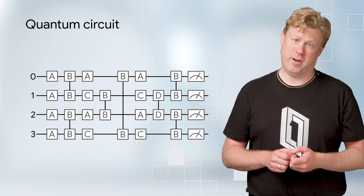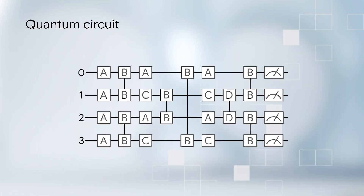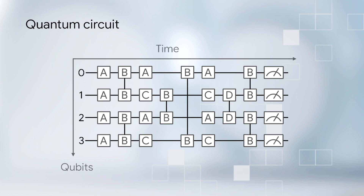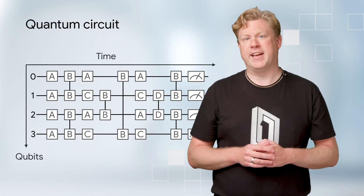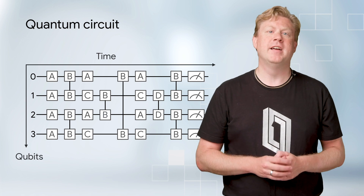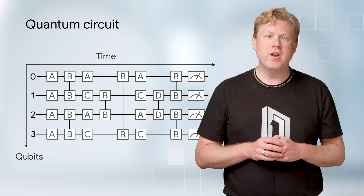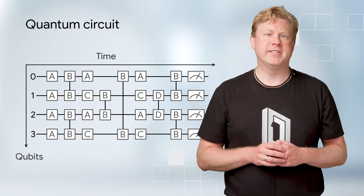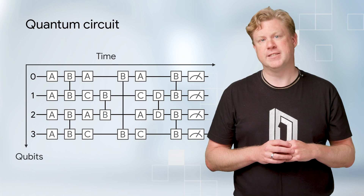Here is an example of a quantum circuit. You read this diagram like a sheet of music from left to right. Each of the qubits in a quantum computer corresponds to a single horizontal wire in the quantum circuit. Here we see that this quantum circuit operates on four qubits.